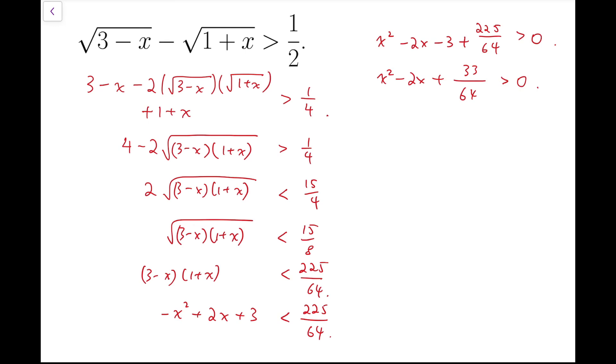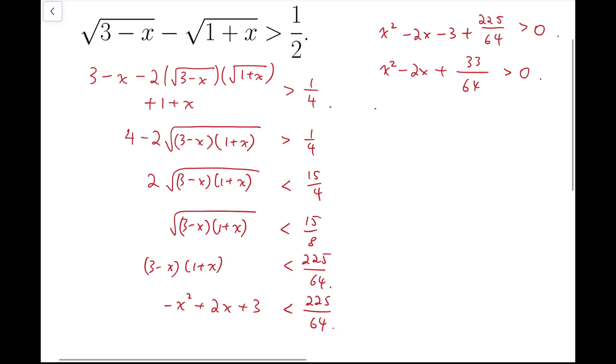To make things look easier, I'm going to multiply 64 on both sides, so that all coefficients are integers. So we have 64 x squared minus 128x plus 33 is greater than 0.